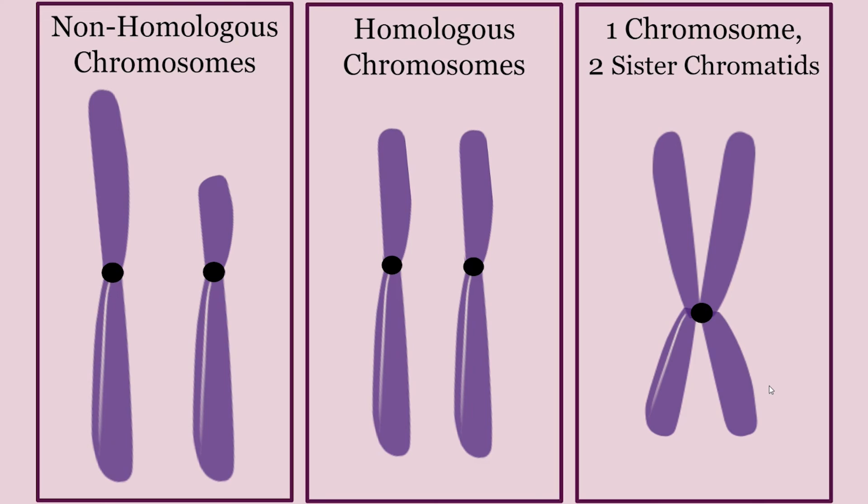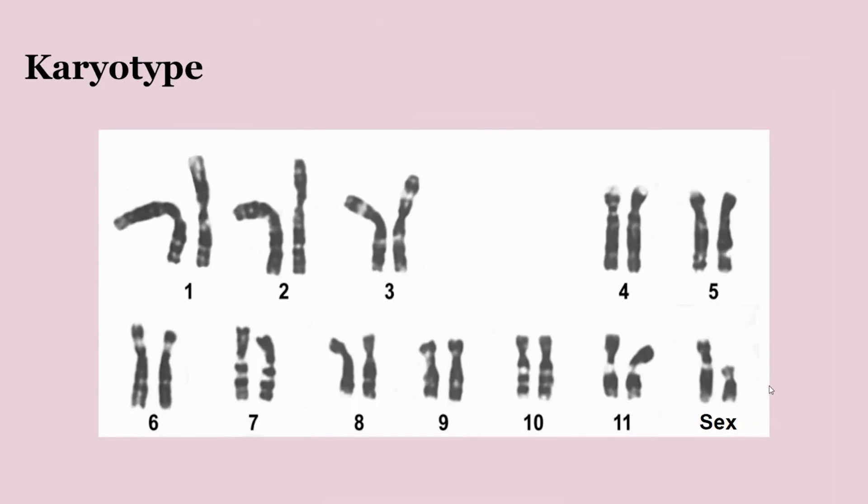It might help to think of some chromosomes as certain kinds of siblings. Sister chromatids are like identical twins. And using this analogy, you could also look at homologous chromosomes as fraternal twins. They're very similar, but they have some different traits, some different alleles at some genes.